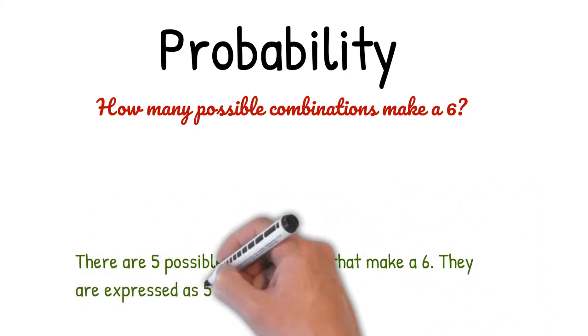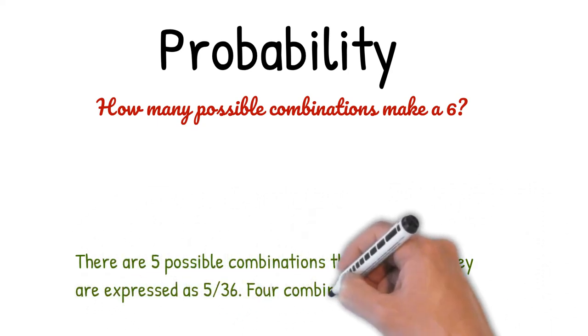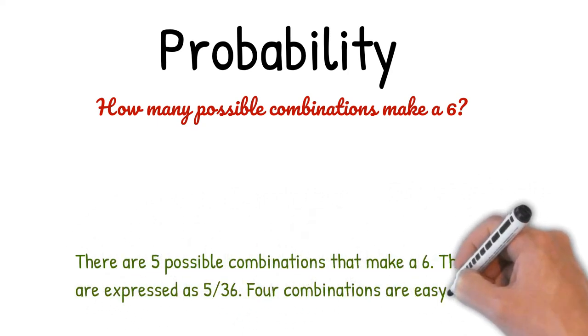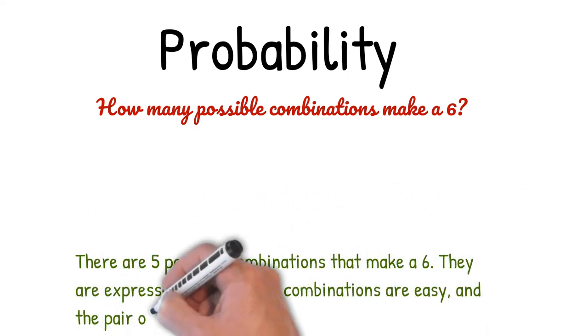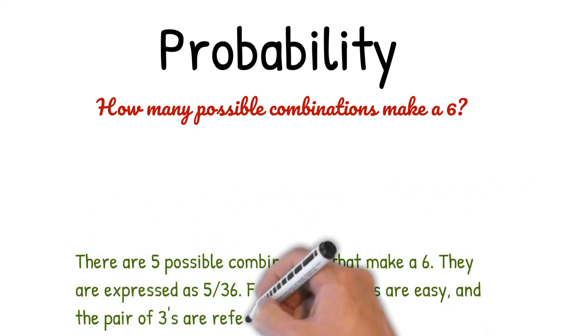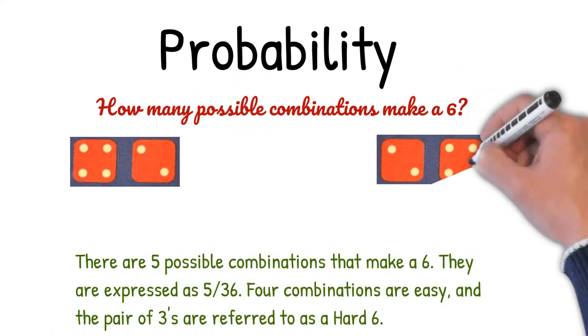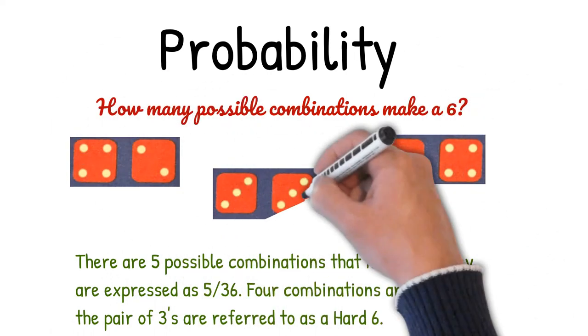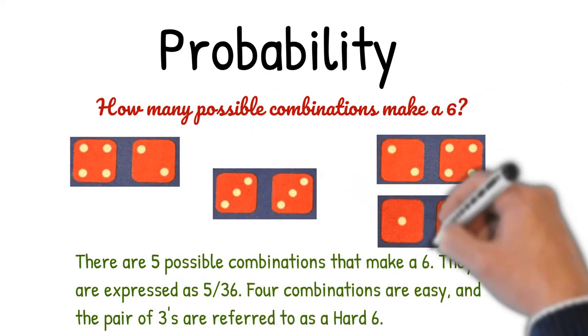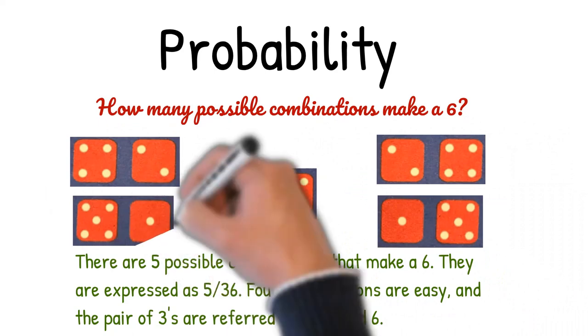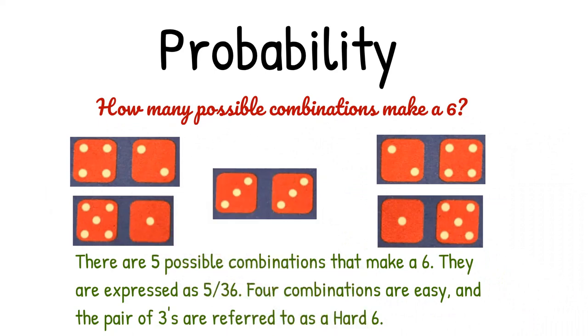Four combinations are easy, and the pair of threes are referred to as a hard six. They are four-two, five-one, three-three, two-four, and one-five.